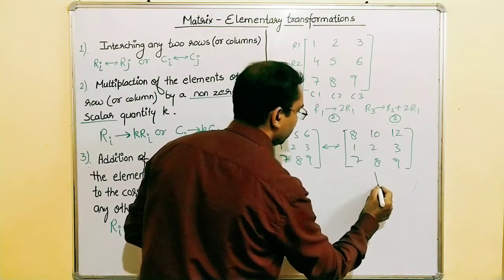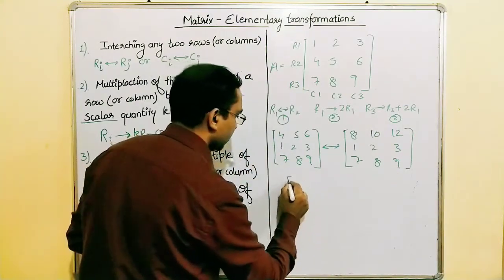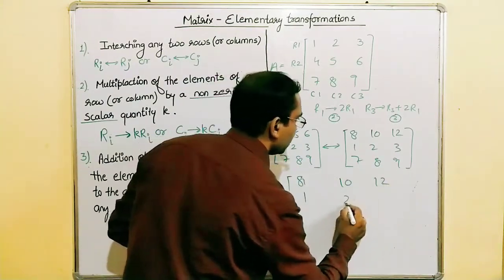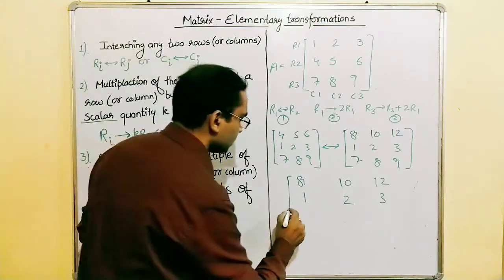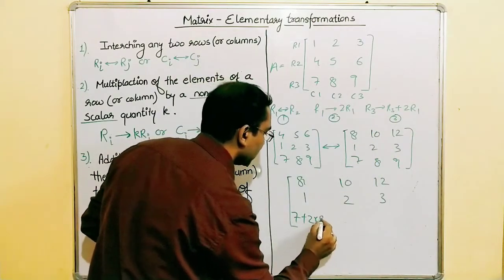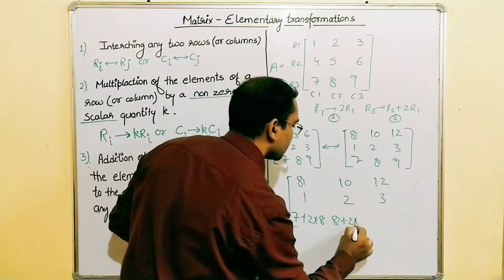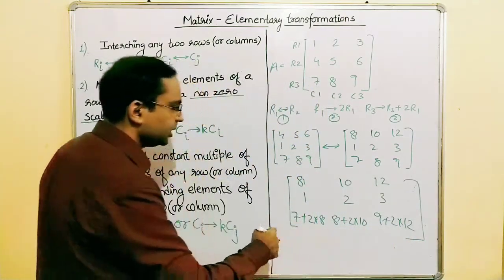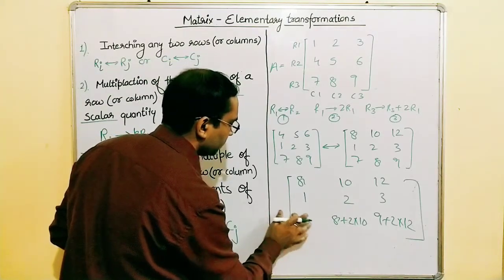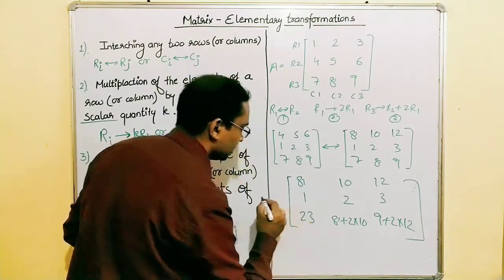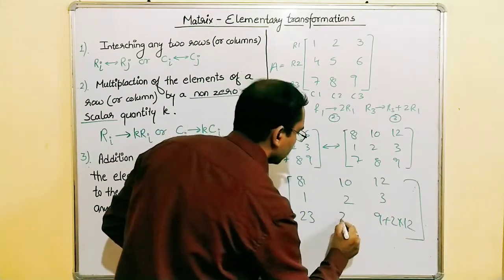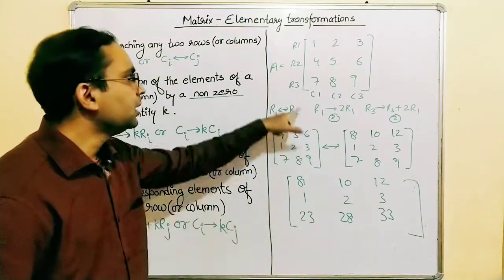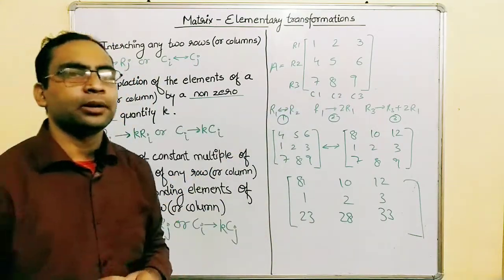Now applying operation three (R3 → R3 + 2·R1) to the updated matrix where R1 is eight, ten, twelve: the new R3 elements are seven plus two times eight equals twenty-three, eight plus two times ten equals twenty-eight, and nine plus two times twelve equals thirty-three. R1 (eight, ten, twelve) and R2 (one, two, three) remain the same. The final matrix is eight, ten, twelve / one, two, three / twenty-three, twenty-eight, thirty-three, which is equivalent to the original matrix A.